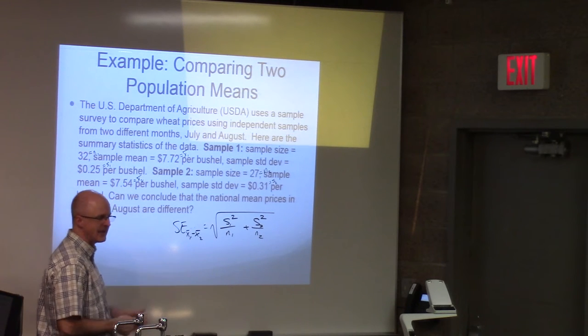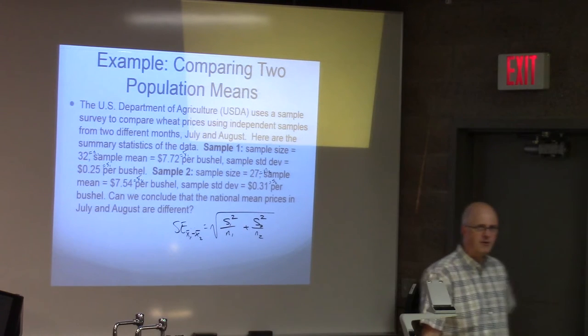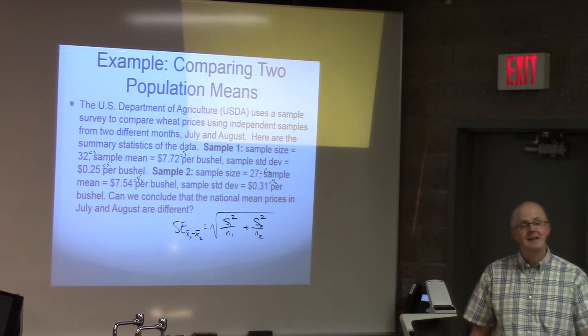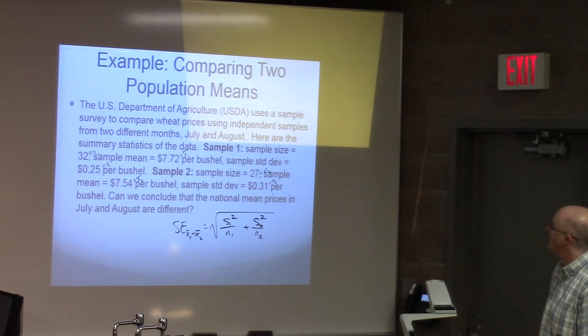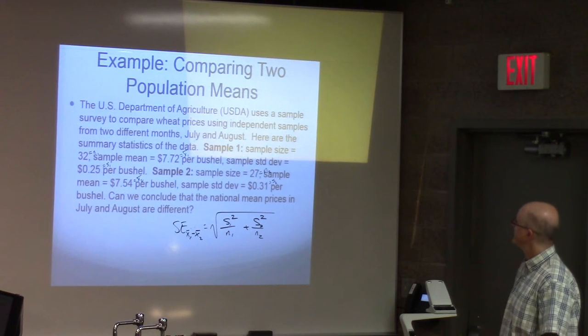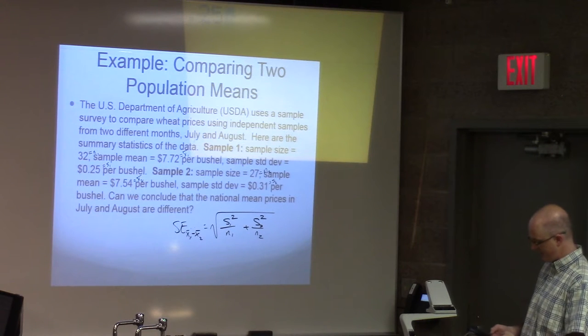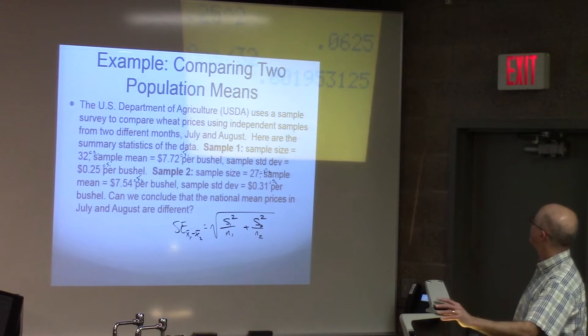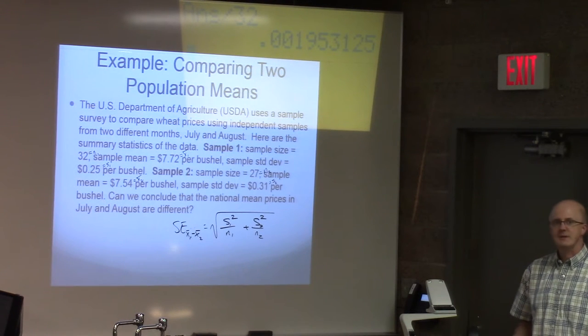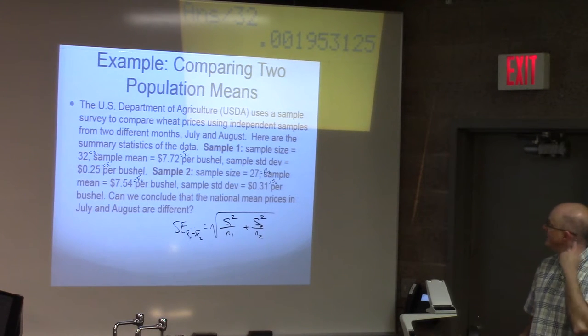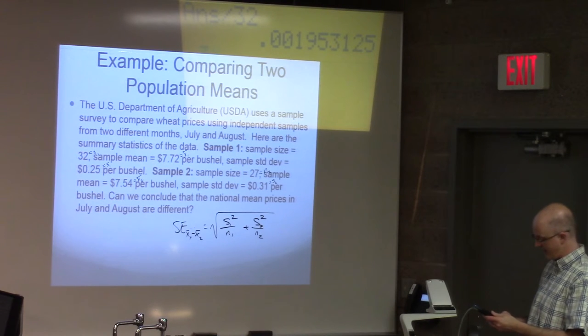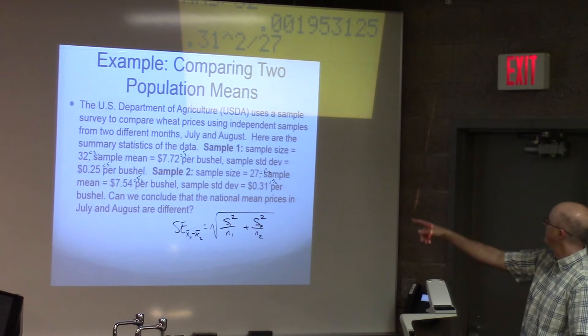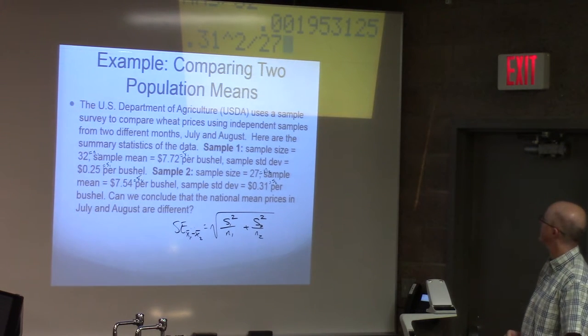This formula is the square root of S1 squared over N1 plus S2 squared over N2. You technically can do this all at once on most calculators. However, for the purposes of showing your work and helping me or the grader find any mistakes and give you more partial credit, you probably should figure out what each piece is. For example, what's S1 squared? That is 0.25 squared. Write that down. Divide that by N1 means divide by 32.